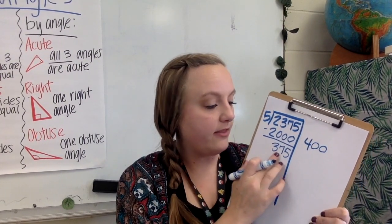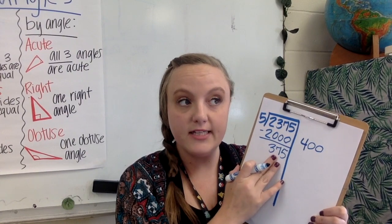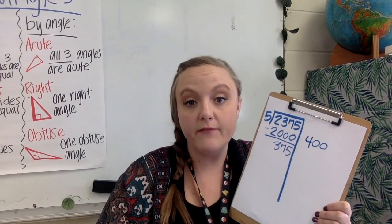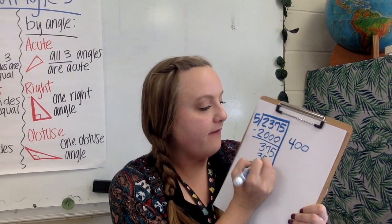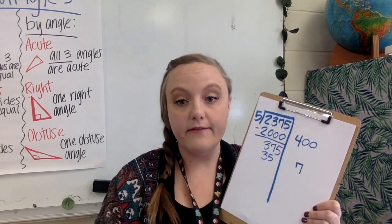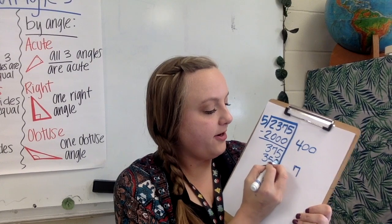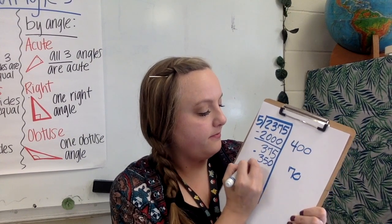So now I'm still going to look at the first two numbers and I have 37. Well, which multiple of 5 is closest to 37? Well, that's 35 and that is the seventh multiple. Fill in a 0, fill in a 0, subtract.